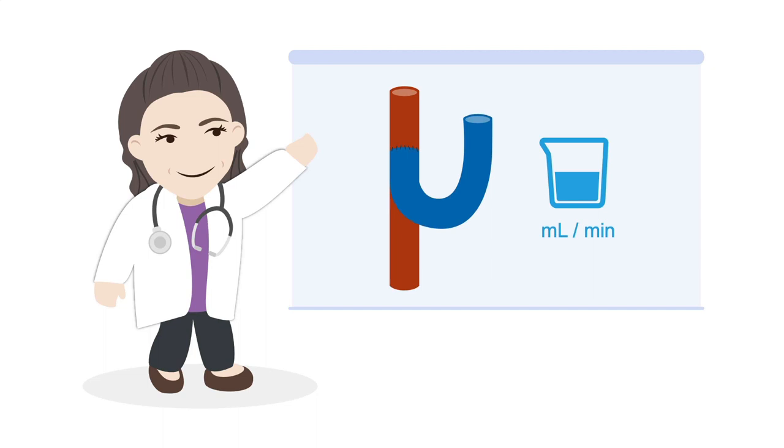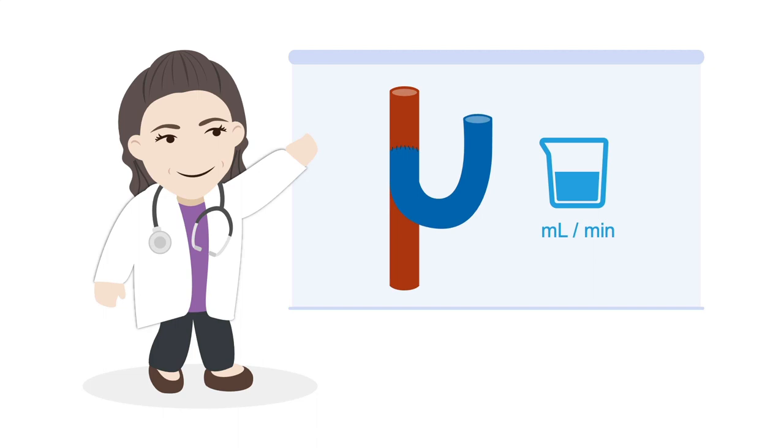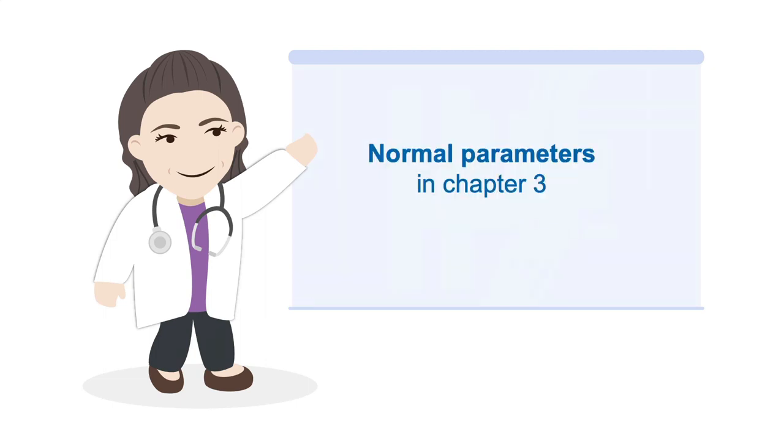You will recall that volume flow is a measurement of the amount of blood flowing through the fistula per minute. This measurement predicts the adequacy of blood flow through the fistula to the heart and is useful in determining fistula maturation and function. We will discuss normal parameters in chapter 3 of this MedMastery course.